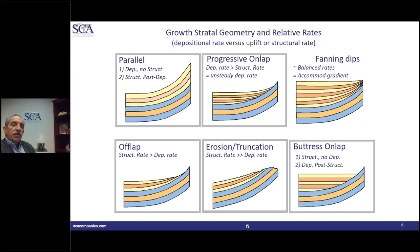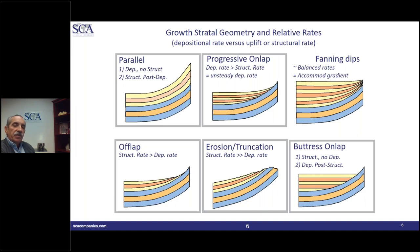Growth strata reflect the relationship between positional rate and structural uplift rate. It's this balance between the two rates that defines strata terminations and the general geometry of growth strata. In a parallel, pregrowth situation everything is parallel. In fanning, there's a clear balance between accommodation space and the uplift rate versus positional rate — the basin margin remains in the same place, meaning for each subsidence step there's an equivalent uplift.